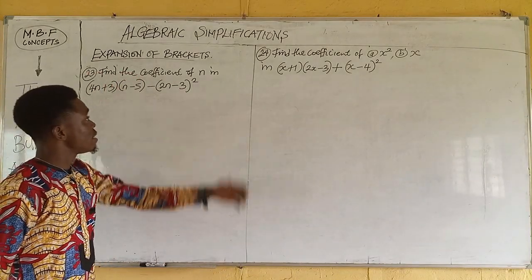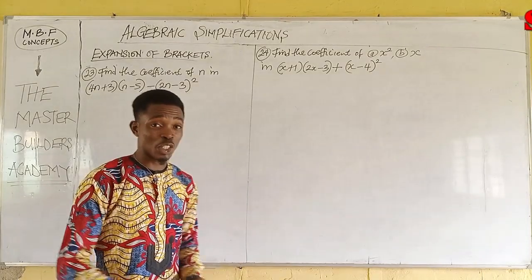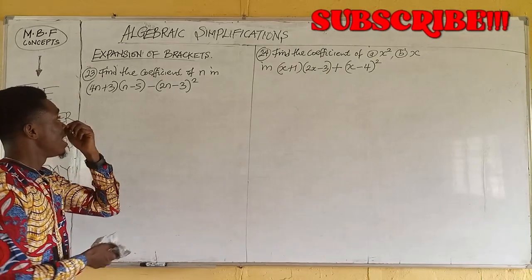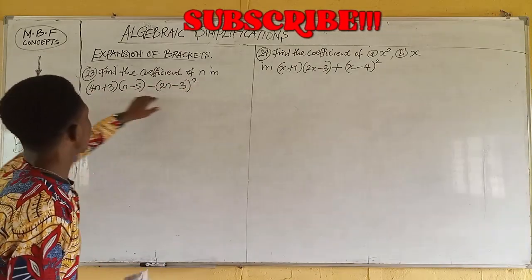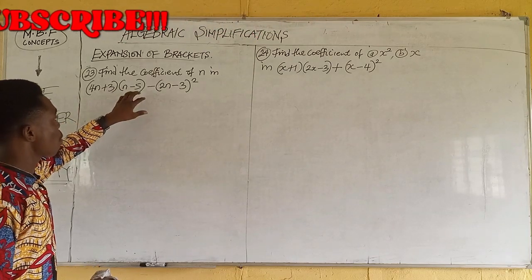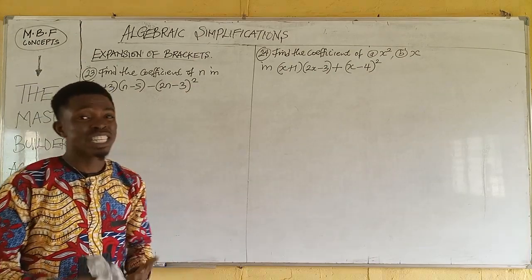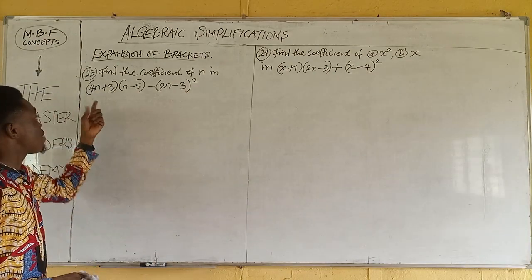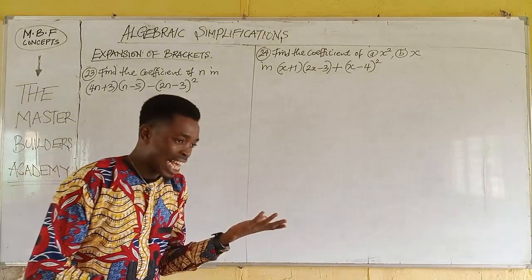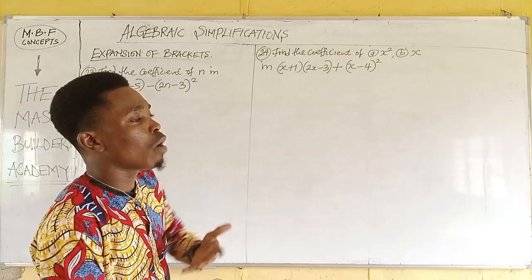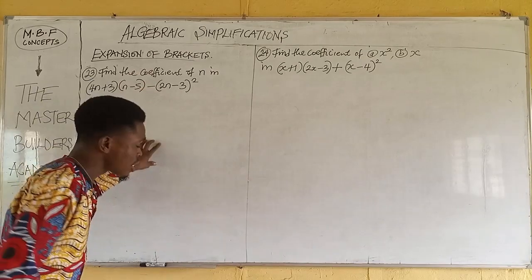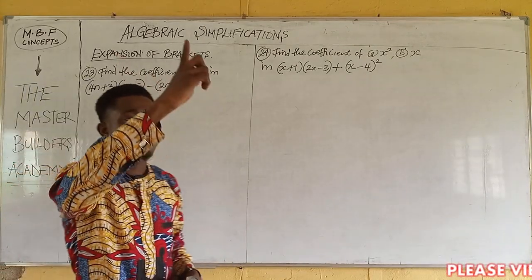We are asked to find the coefficient of n. This is not just a normal expression but an expression question — this is where we have challenges with students. We are asked to find the coefficient of n in: 4n + 3, open bracket, n minus 5, close bracket, minus 2n minus 3. Here we already have coefficients of n in different forms. For me to find the coefficient of n, n squared, or even the constant, I have to simplify this question to a point where I will only have n once.